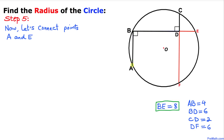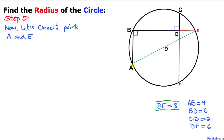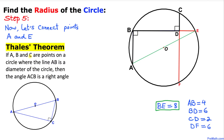Here is our next step: let's go ahead and connect points A and E. Here is our much nicer looking graph, and we can see that we have a right triangle A, B, E. Now let's recall Thales' theorem: if A, B, and C are points on a circle where the line AC is a diameter, then the angle ABC is a right angle. In our case, since we have this right triangle and points A, B, E are on the circle, line AE is our diameter according to this theorem.